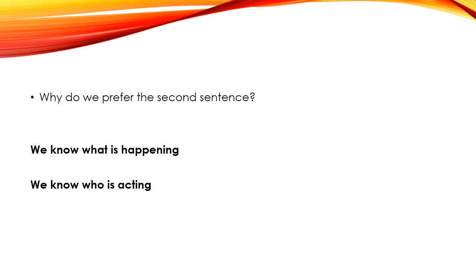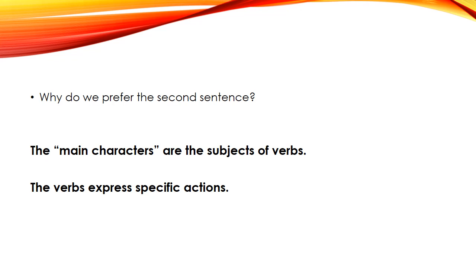Why do we prefer the second version? For two primary reasons: one, we know what's actually happening, and two, we know who's doing it — we know who is acting. To put that in grammatical terms: the main characters of the story are the subjects of the verbs, and the verbs express specific and important actions.